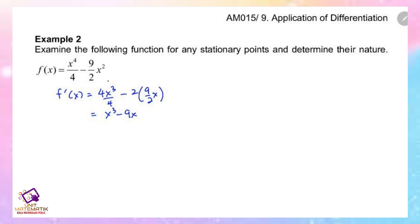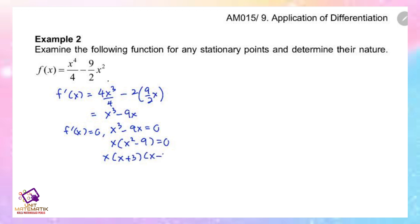Then, set f prime equal to 0 so that we can find the stationary point: x cubed minus 9x equals 0. We factorize to get x times (x squared minus 9), which further factorizes to x times (x plus 3) times (x minus 3).